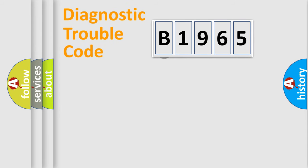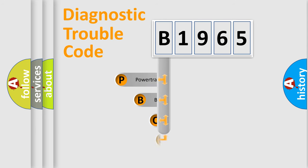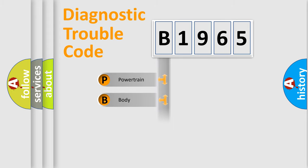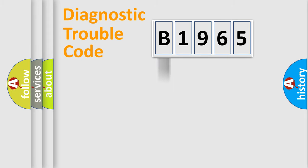Let's do this. First, let's look at the history of diagnostic fault code composition according to the OBD2 protocol, which is unified for all automakers since 2000. We divide the electric system of the automobile into four basic units: Powertrain, Body, Chassis, and Network.